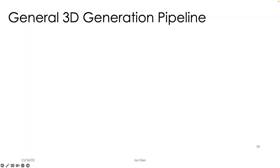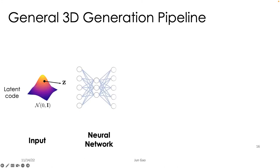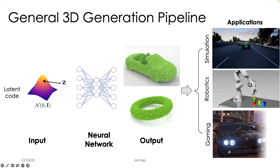Before we look into technical details, let's step back and look at what a general 3D generation pipeline could be. In general, 3D generation works like this: with some input — a latent code sampled from a prior distribution — we have a neural network that encodes this input and decodes the 3D shapes in some format that can be utilized in downstream applications such as simulation, robotics, or gaming.